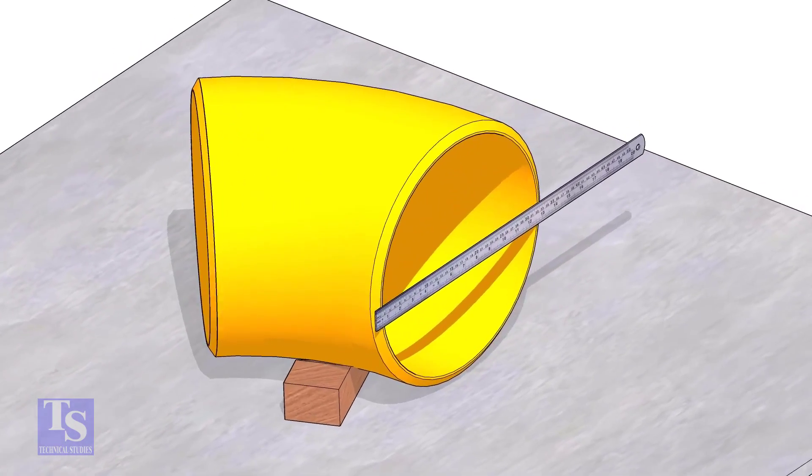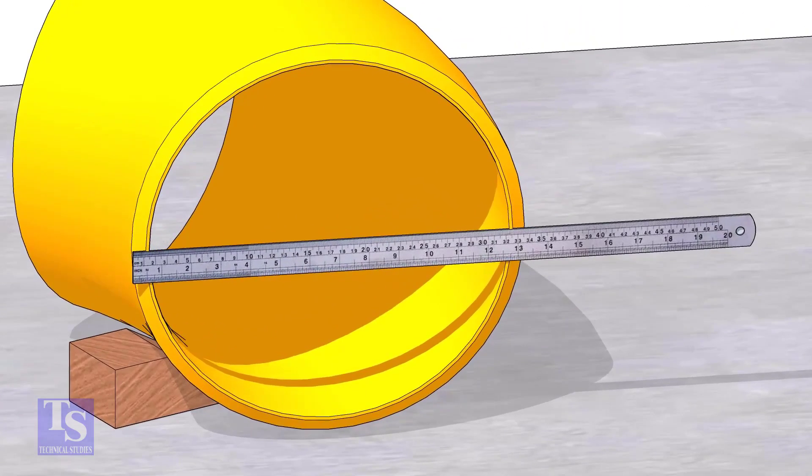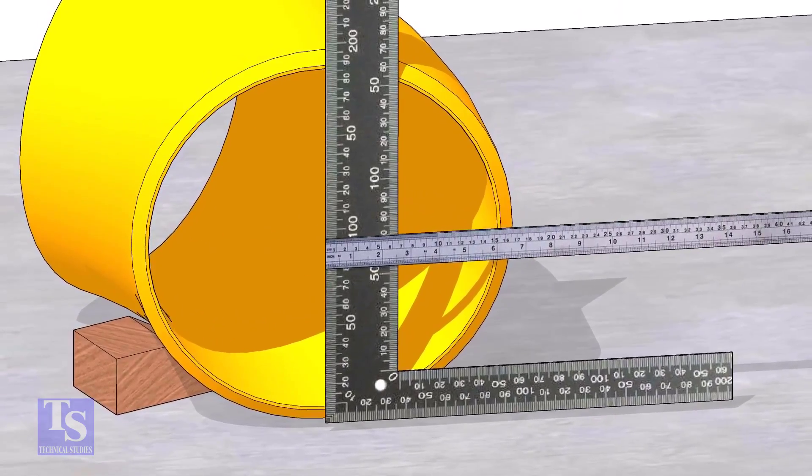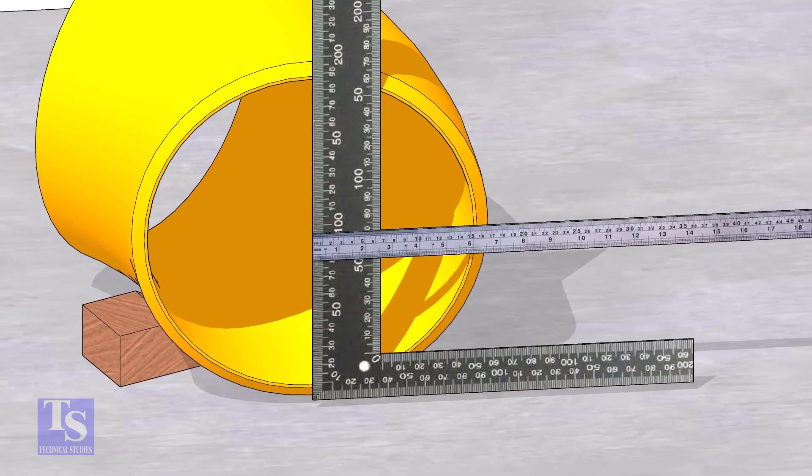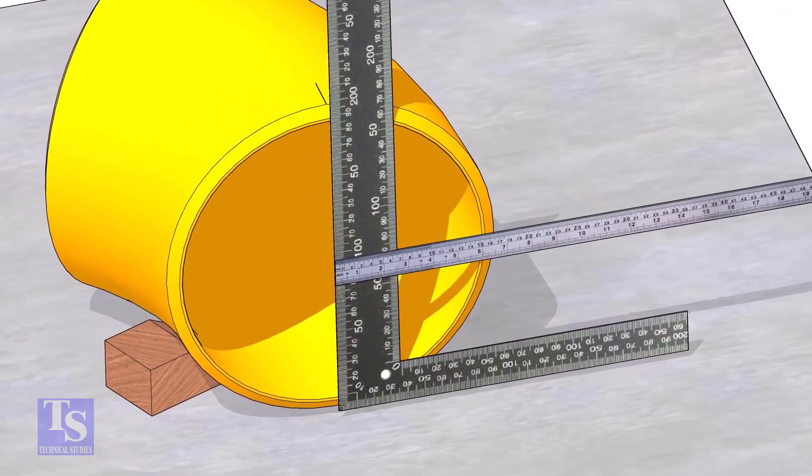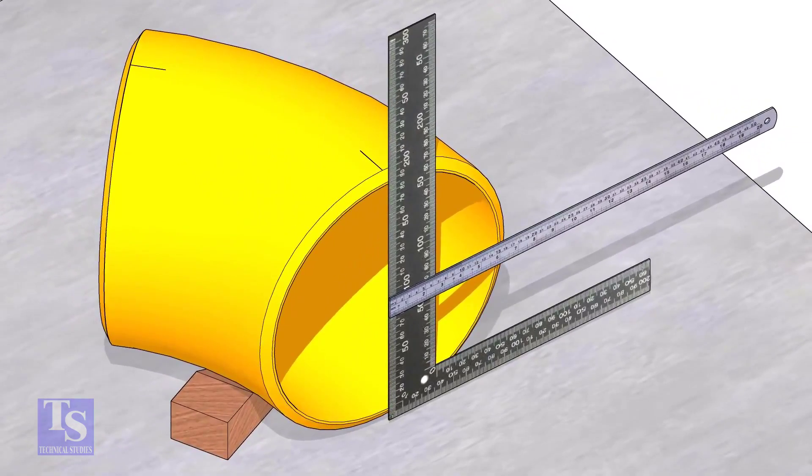Measure the OD. Put a right angle at the middle of one face of the elbow. Make sure the edge of the right angle is exactly at the center. Draw a line where the right angle edge touches the elbow face on the top and bottom side.